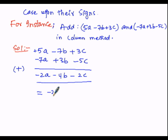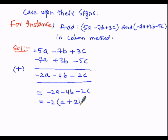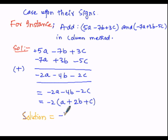So the result is minus 2a minus 4b minus 2c. We can take minus 2 as common. When minus 2 is taken as common, a is left over. The minus sign becomes plus inside the bracket, and taking 2 out as common leaves c. So the solution is minus 2 times (a + 2b + c).